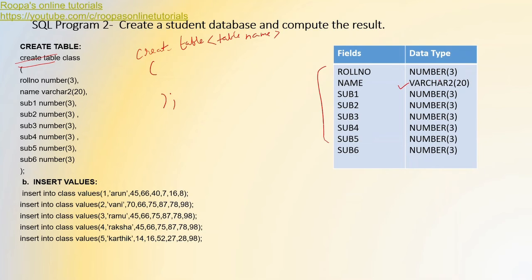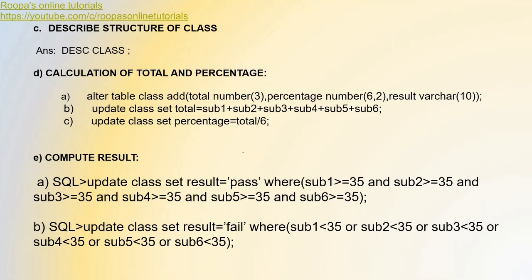Next we have to insert values. As I told you earlier, wherever there is a name or string, use single quotes. The rest are numbers — no quotes needed. The values should be in the same order: role number, student name, and then all the subject marks the student has got. When entering marks, make sure to enter some marks less than 35 so that you can display some students who have failed.